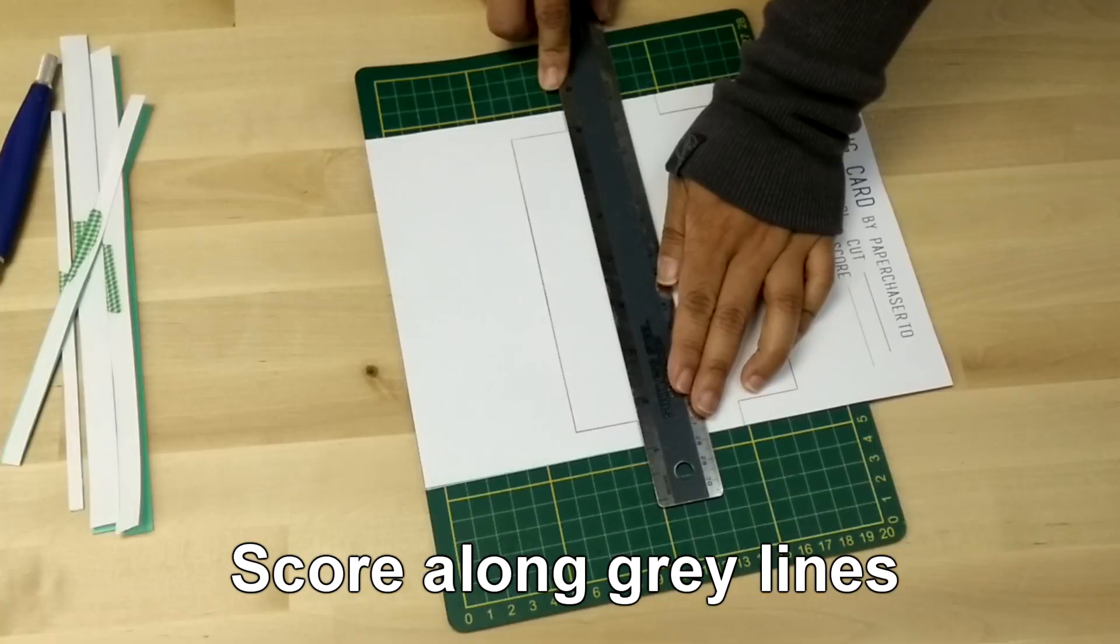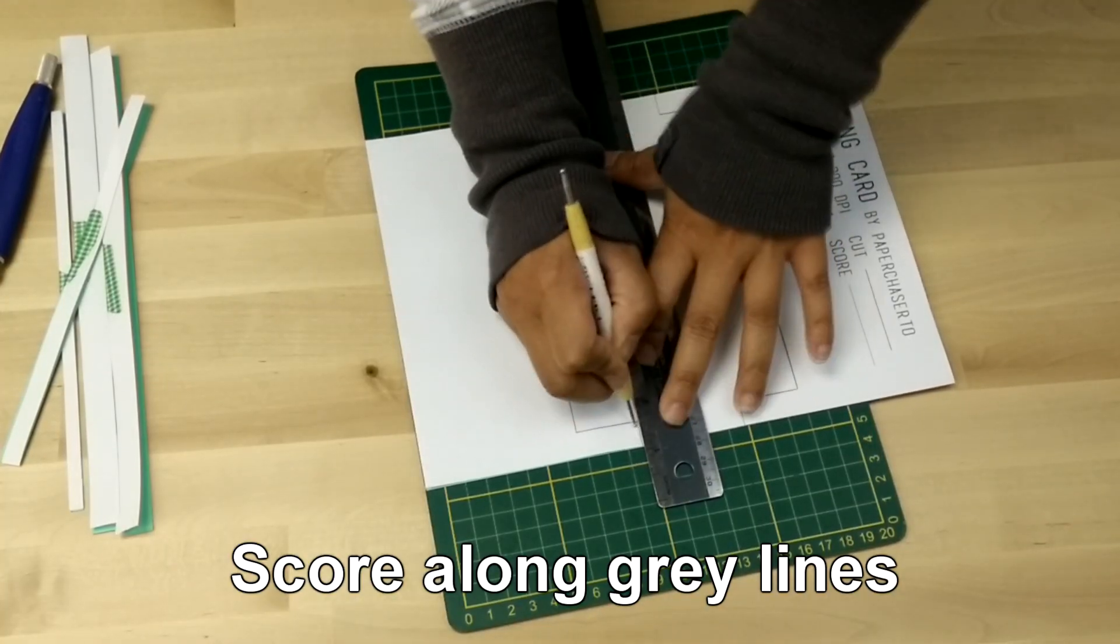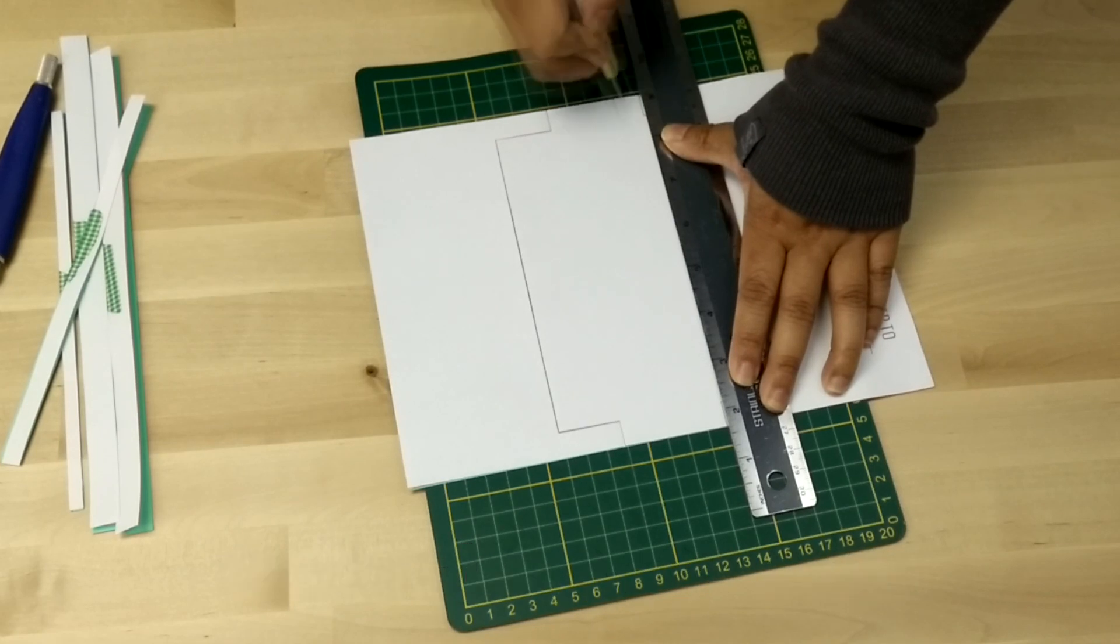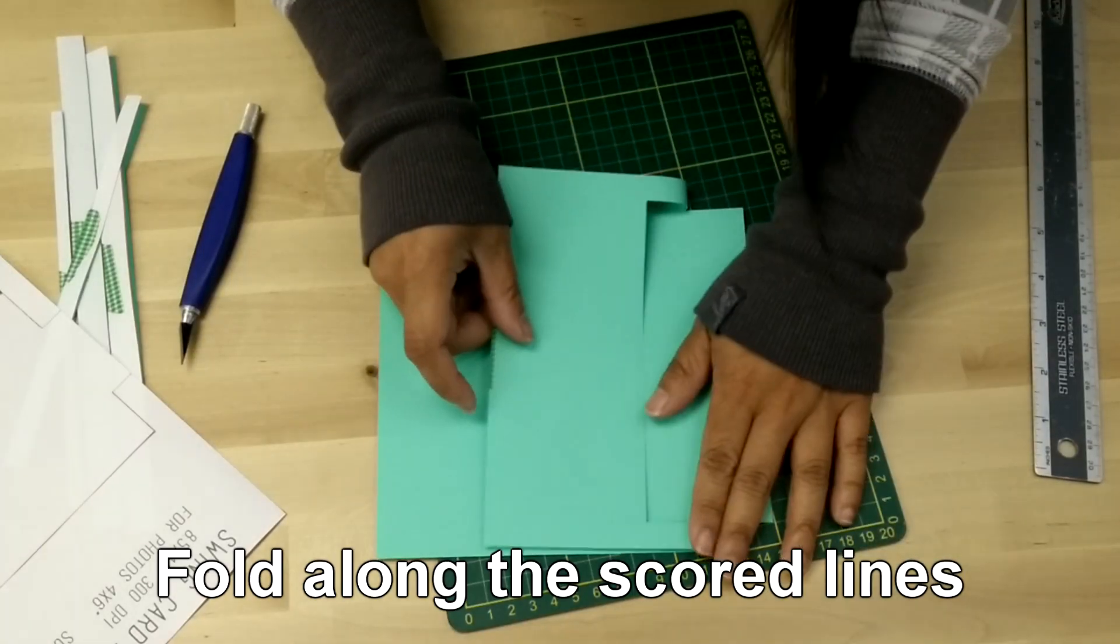Once you have that done, score along the gray lines. Remove your template sheet and you're left with your cut and scored cardstock.